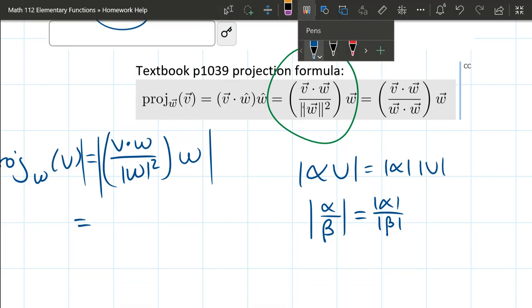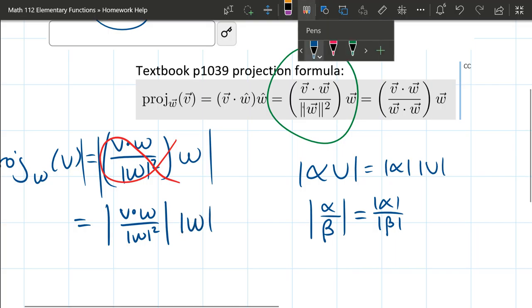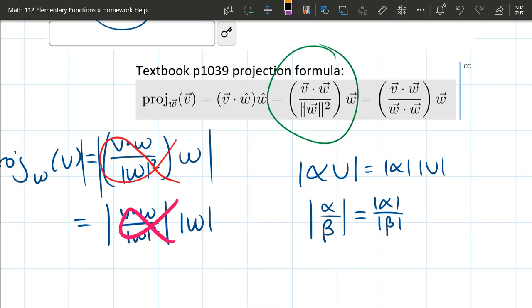So I'll use this red marker right here. Everything in the parentheses is one, trying to draw a nice alpha. Everything in the parentheses is one number, so let's think of it as the number alpha. And so I can distribute the magnitude to v dot w divided by magnitude w squared times the vector w's magnitude. So again, think about this as alpha right here.